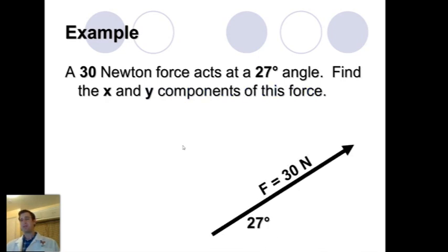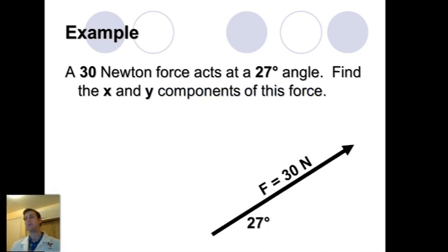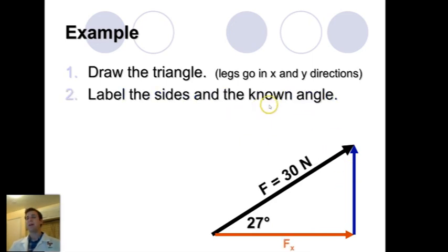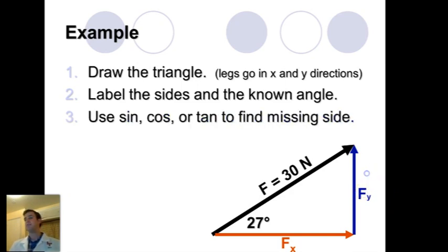Let's do an example of Sokotoa and see if we can figure out how to find the different components. Let's say that we're pulling up and to the right with 30 newtons and it's at a 27 degree angle. And we want to know what are these components that are pointing to the right and how much of this arrow is pointing up. So we draw the triangle. So we have our red arrow that represents the X component and the blue arrow represents that vertical or Y component. We label these sides and we label everything in the triangle. So we know that the F is 30. The angle is 27. FX is always going to be horizontal. And the FY is always going to be vertical. And then we use our sine, cosine, or tangents to find our missing sides.